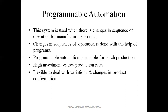Programmable automation is suitable for batch production — we can produce any product or combination of products in one single batch. The drawback is that it also requires high investment, as programming software is used. The time required for production will be higher, and there will be a lower production rate. However, it is flexible to deal with variations and changes in product configuration. There is no need for R&D separately — changes can be made on the process line itself, modifying the product as per the requirement of the firm or society.